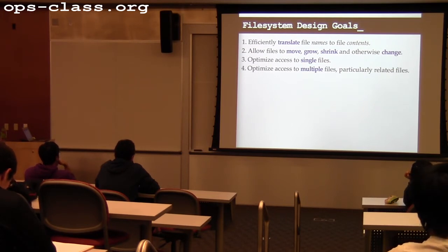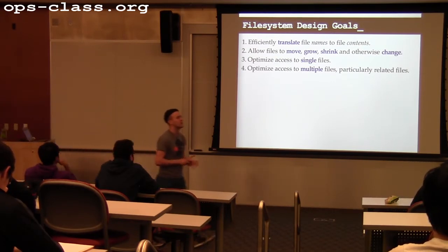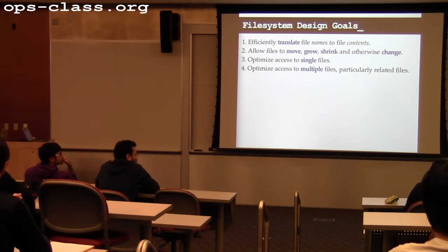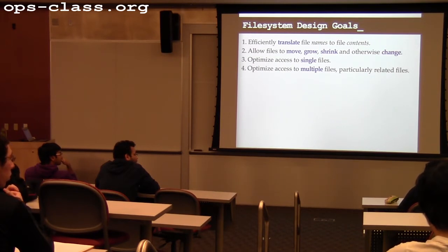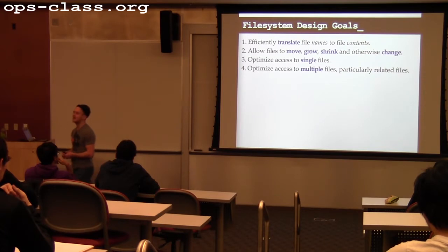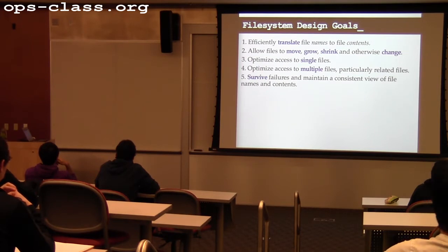We haven't really talked about optimizing access to multiple files, which is another file system design goal. If I knew that a set of files were frequently accessed together, one trick is to put them close to each other on the disk — in the same cylinder group — so the disk can get at them without seeking the heads too far. And somebody mentioned consistency, which is exactly right. We want to survive failures and maintain a consistent view of file names and contents.